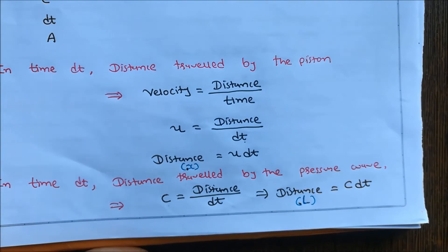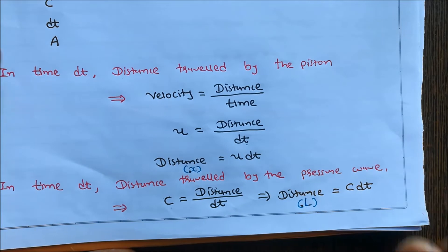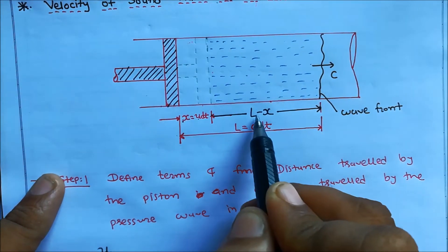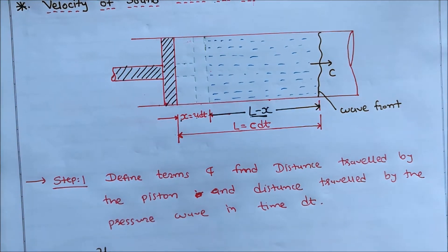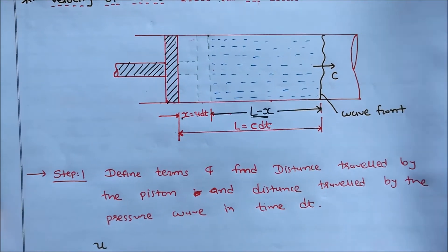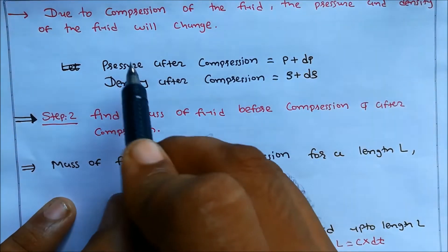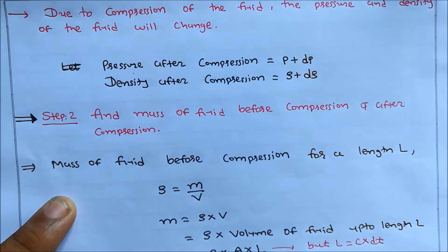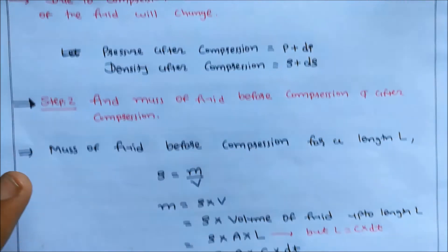The distance travelled by the pressure wave is l and the distance travelled by the piston is x, so the fluid will be compressed in the length of l minus x. Because of this compression, the pressure and density of the fluid will change. The pressure before compression is P, so the pressure after compression is P plus dP. Similarly, the density after compression is rho plus d-rho.